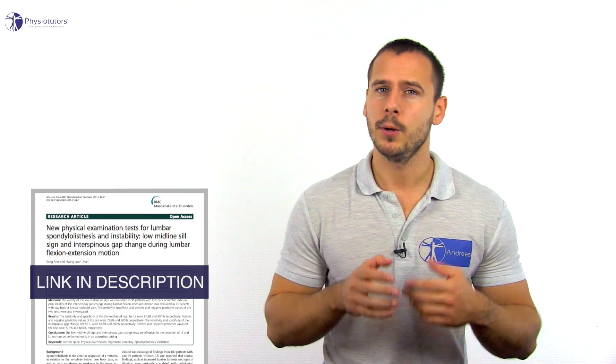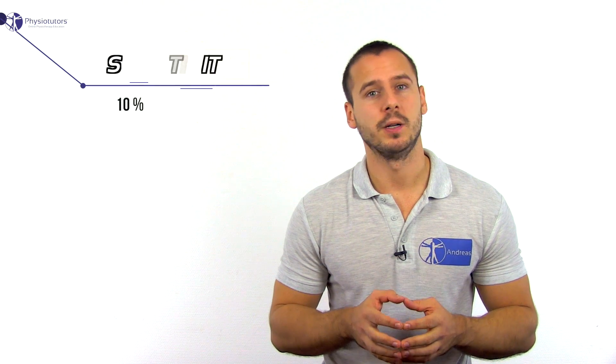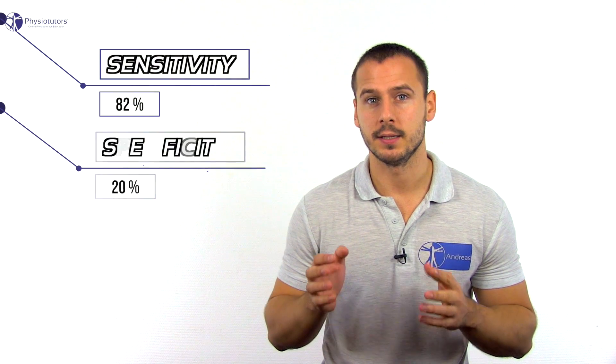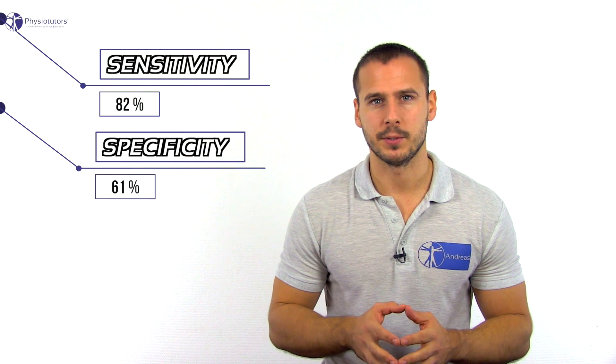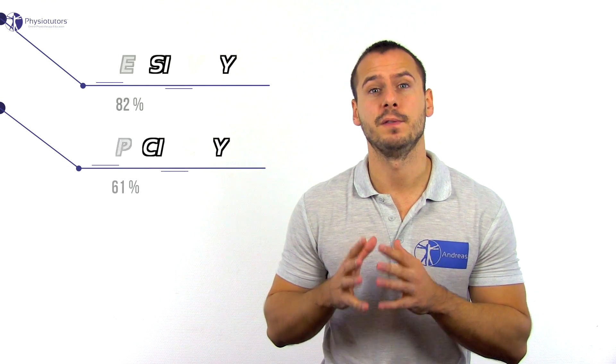Welcome back to Physiotutors. We have previously discussed the passive lumbar extension test for lumbar instability here on the channel. Arne et al. in 2015 proposed a different test, namely the interspinous gap change, and report a sensitivity of 82% and a specificity of 61% when compared to lumbar flexion extension radiographs using a cutoff value of 10 degrees for sagittal rotation and 4 mm of sagittal translation.